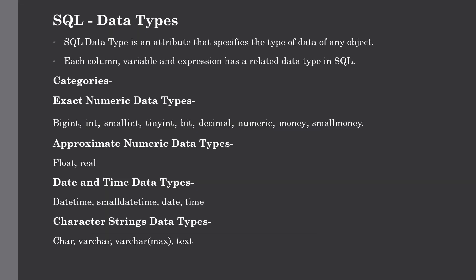Now we will discuss the different data types in SQL. A SQL data type is an attribute that specifies the type of data of an object — each column, variable, and expression has a related data type. We choose a data type for a table when creating it based on the columns we require. There are six main categories: exact numeric types (bigint, int, smallint, tinyint, bit, decimal, numeric), and approximate numeric types (float, real).